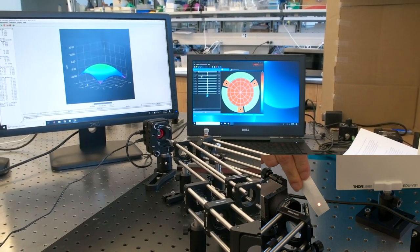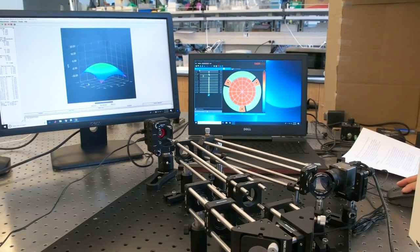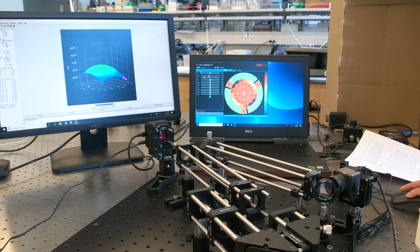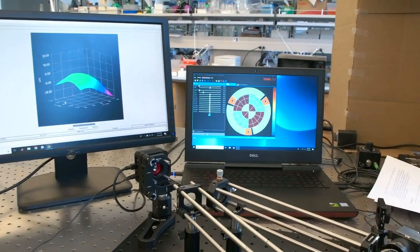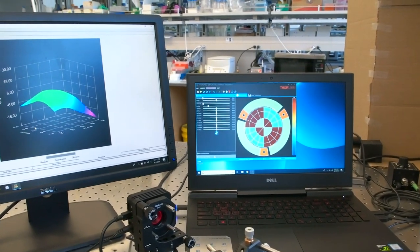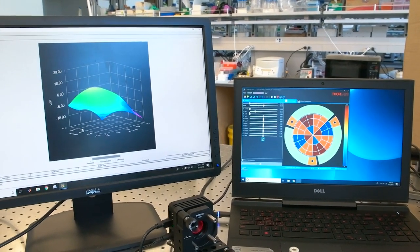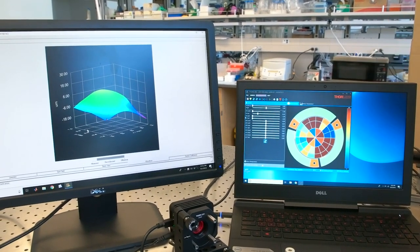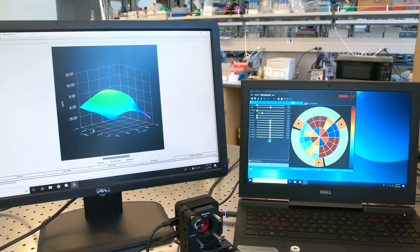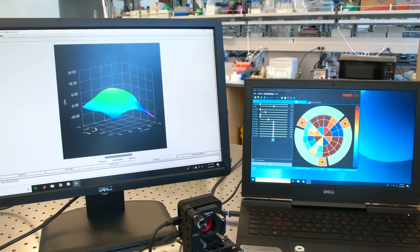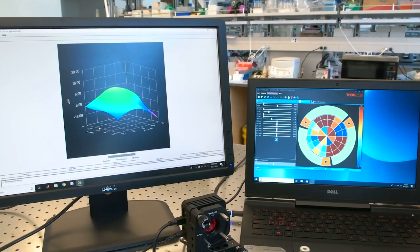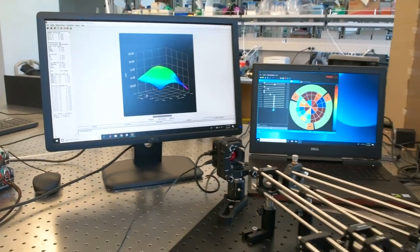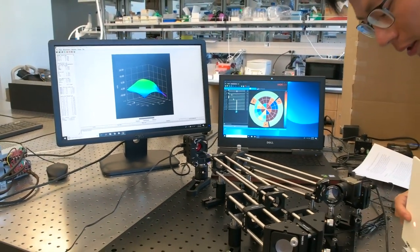By changing more Zernike coefficients, we can generate very complicated shapes with the deformable mirror, resulting in very complicated wavefront shapes. This ends up giving us a very complicated shape of the laser beam here.